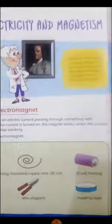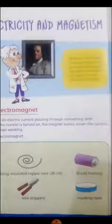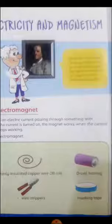Electromagnets can also be made. What you will need: large iron nail, thinly insulated copper wire 30 cm, diesel battery, paper clips and pins, wire strippers, masking tape.